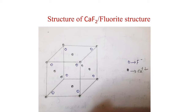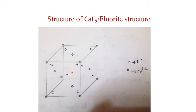Calcium ions occupy all corners and face centers. Fluoride ions occupy all tetrahedral voids. Taking a front-top corner to the back-bottom opposite corner as one body diagonal, there are two tetrahedral voids along it. Similarly, taking the back-top corner to the front-bottom corner gives another body diagonal with two tetrahedral voids. With four body diagonals total, there are 8 tetrahedral voids.